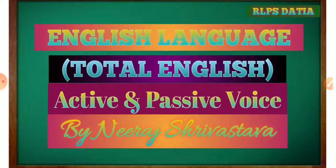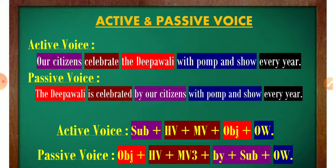For example: 'They celebrate Diwali every year' in active voice, or 'Diwali is celebrated by them every year' in passive voice. So when we give priority to the subject, that is called active voice, and when we give priority to the object, that is called passive voice. So let's start.